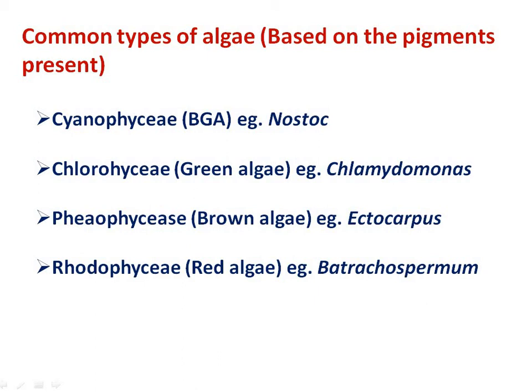The second type is Chlorophyceae: the color of this algae is green due to the presence of a green pigment, chlorophyll. Examples of green algae are Chlamydomonas and Chlorella.